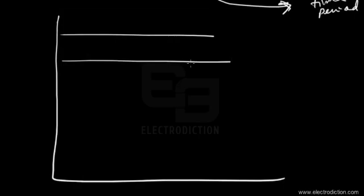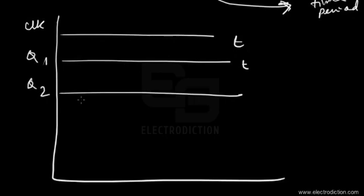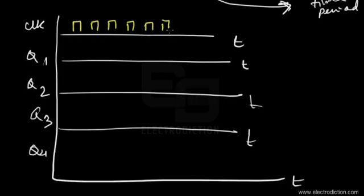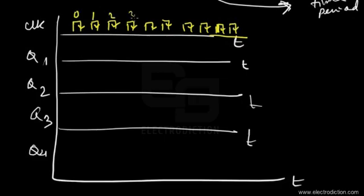Looking at the timing diagram for this circuit, we have the clock input on the time axis, followed by Q1, Q2, Q3, and Q4. The clock pulses occur at regular intervals. Upon the negative edge of each clock pulse, the flip-flop outputs change state due to toggling. There are 10 clock pulses representing the 10 states from 0 through 9.